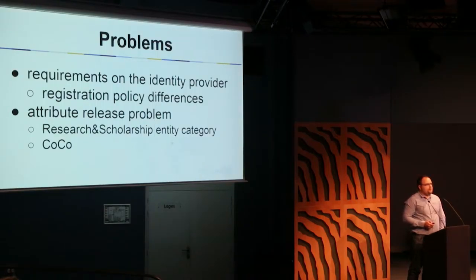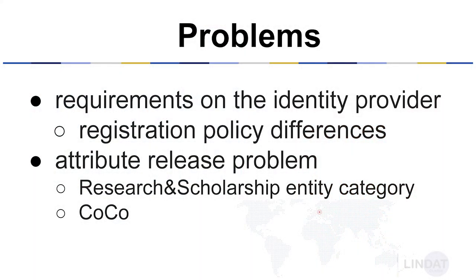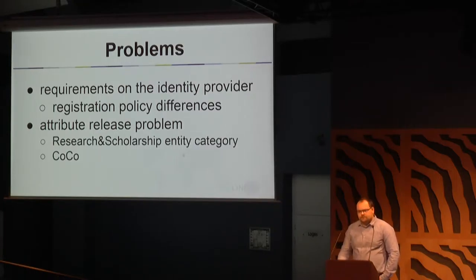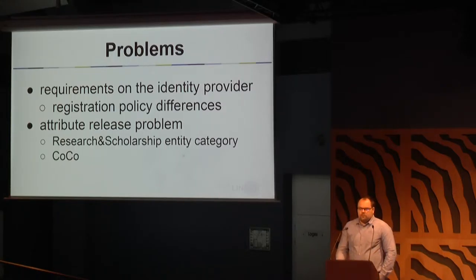Even with these two simple requirements, there are already a lot of problems. One of them is that the registration policies are really different, and there are IDPs who do not identify you. The big advantage of the home organization giving you identities is that they are trustworthy — at a university you won't get an academic degree without being identified, and you won't get a salary at an institute without being identified. But if there is an IDP that just requires nothing but an email, this is a problem. The second problem is that the attributes are not released as you would like — and this is what this presentation is about.